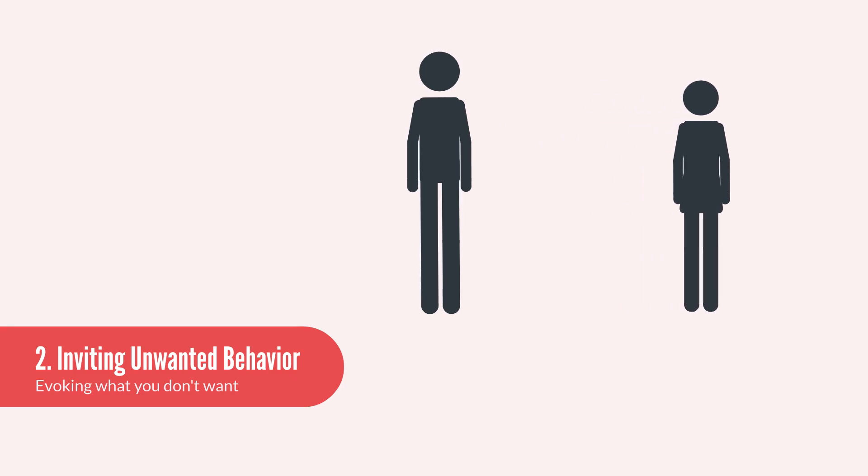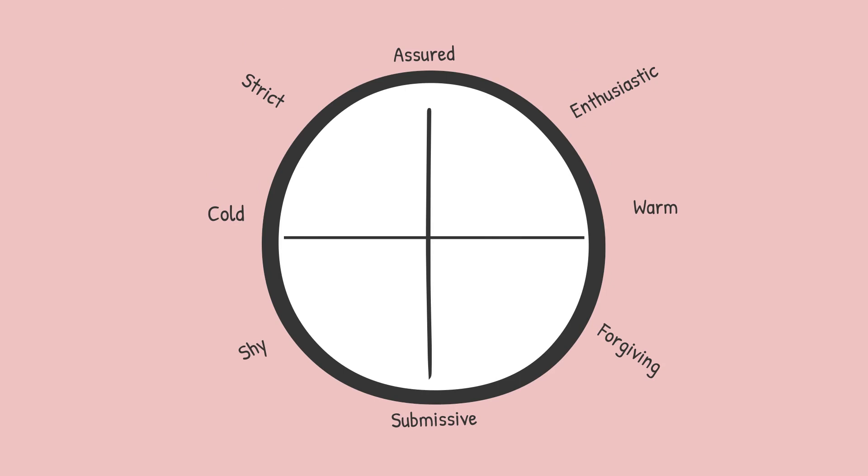The circumplex is useful because you can treat it like a compass and figure out what direction to move in to reach a destination. If you're condescending, in the region of excessive strictness and coldness, for example, and you want to be moderately assertive, you mainly need to move in the direction of greater warmth, and then only slightly in the direction of less agency. A useful exercise is to take a circumplex and plot where you are and where you intend to be with any group of people. Then separate the degree to which you need to change your level of agency from the degree to which you need to change your level of warmth.